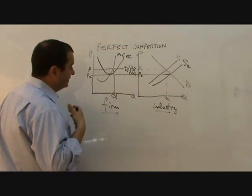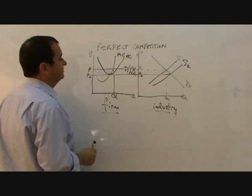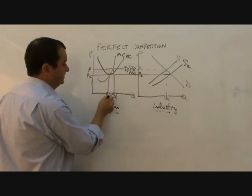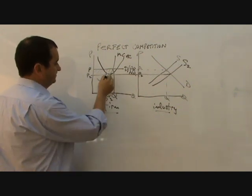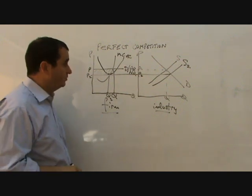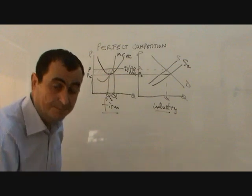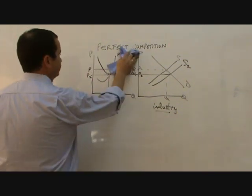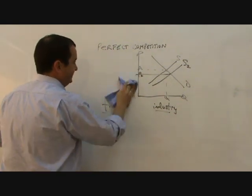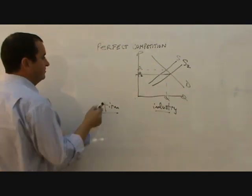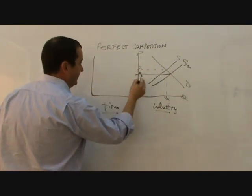And we are left with the long run equilibrium position, which does not allow abnormal profits. Now, I'm going to tidy this up, leaving just price two. So, bear with me as I rub out this and replace it with the long run equilibrium at price two.